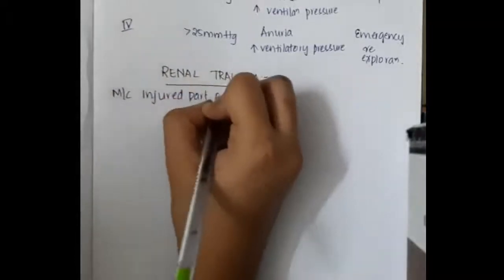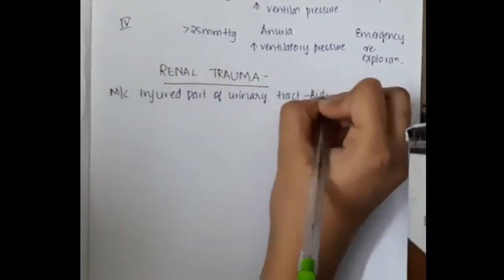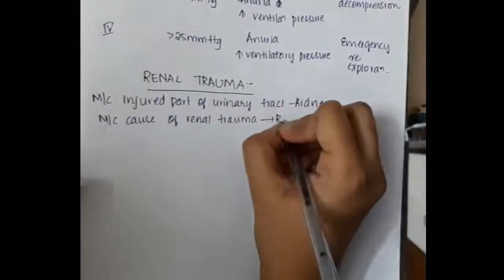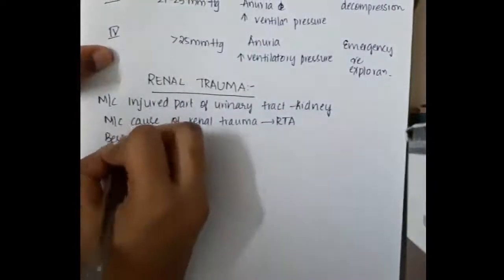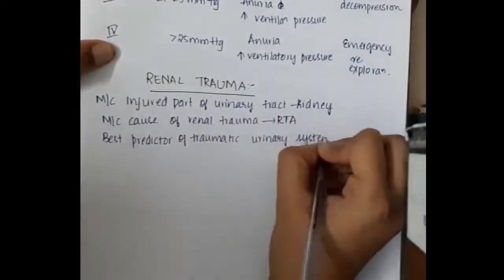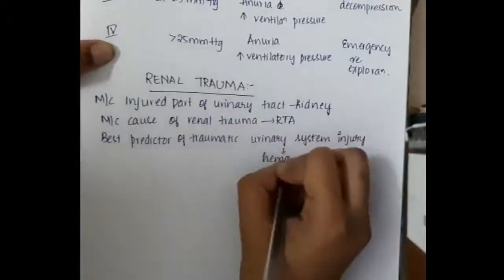The most common injured part of the urinary tract is kidney. The most common cause of renal trauma is road traffic accident. The best predictor of traumatic urinary system injury is presence of hematuria.